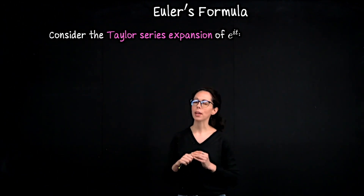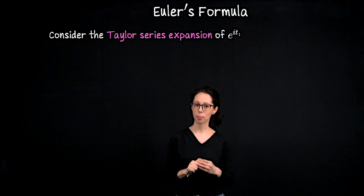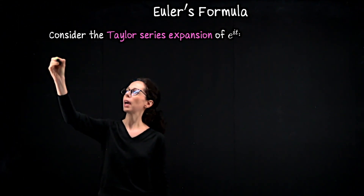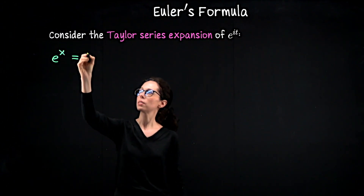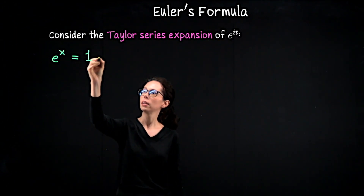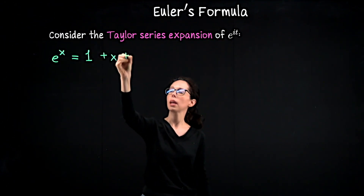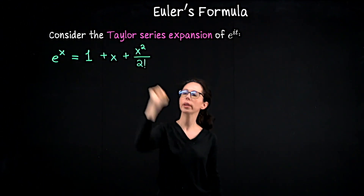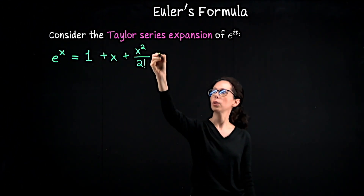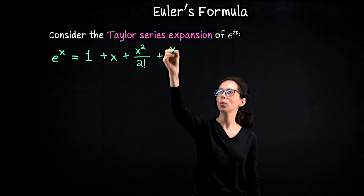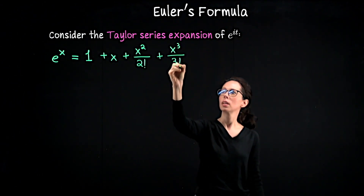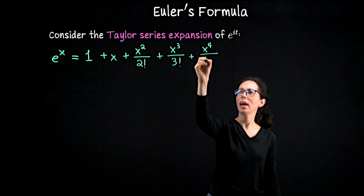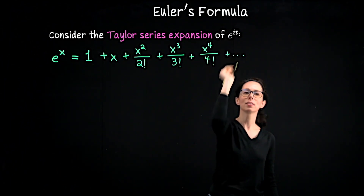First, let me remind you of what the Taylor series expansion for e to the x looks like. E to the x is 1 plus x plus x squared over 2 factorial, plus x cubed over 3 factorial, plus x to the 4th over 4 factorial, and so on.